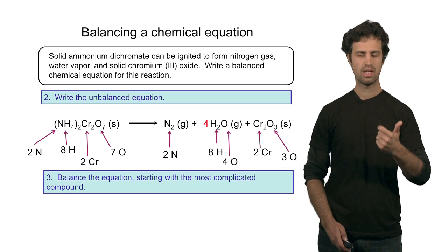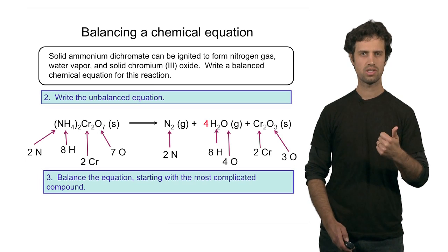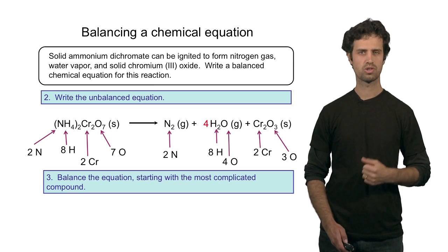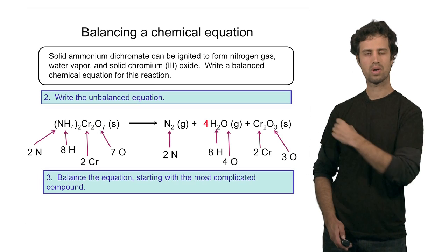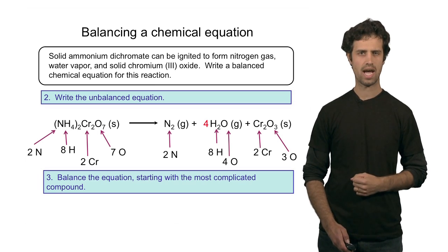So nitrogen and chromium, which were already balanced, are now supplemented with oxygen and hydrogen, which are also balanced. That means this equation is balanced by putting a four in front of the water molecule. So we've balanced this reaction.